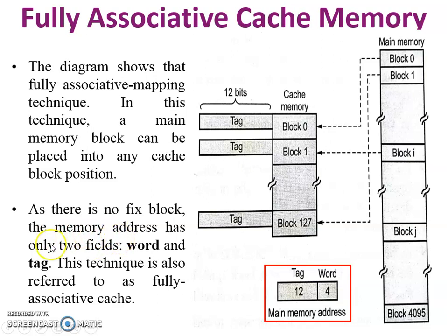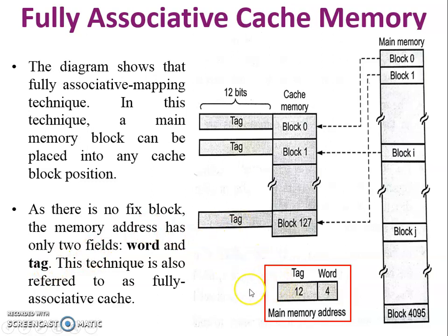The memory address has only two fields. In direct mapping cache there are three fields, but here there are only two fields: word and tag. In direct mapping there are three fields — tag, block, and word. This technique is also referred to as fully associative cache.